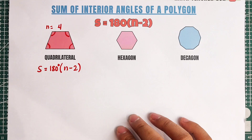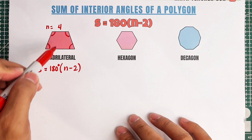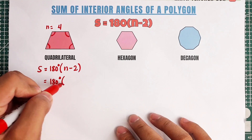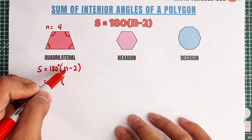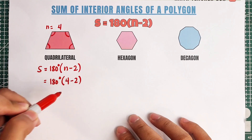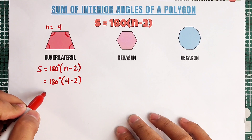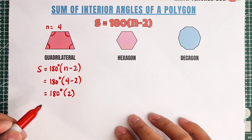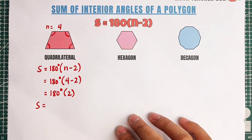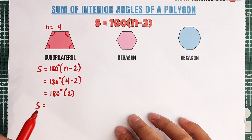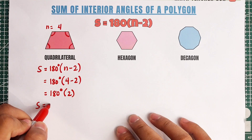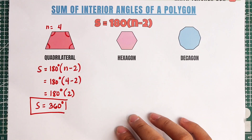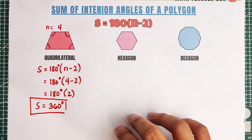Now, how to use the formula? All we need to do is to plug in the value of N. It goes like this: we have 180 degrees times N, which is 4. So that becomes 180 degrees times (4 minus 2). Simplify the parentheses — 4 minus 2 is equal to 2. And simplifying further, 180 degrees times 2 equals 360 degrees.